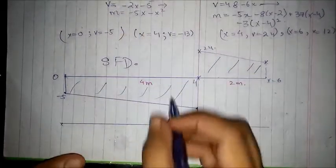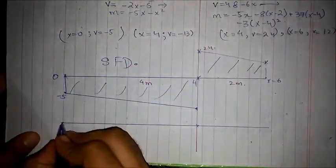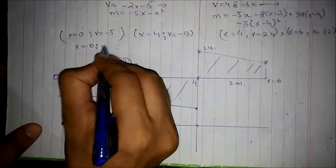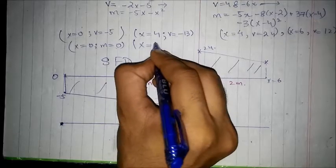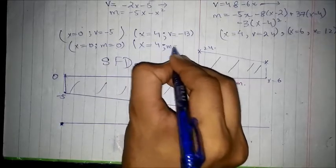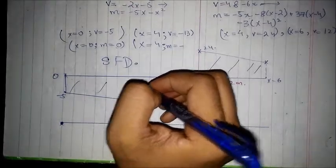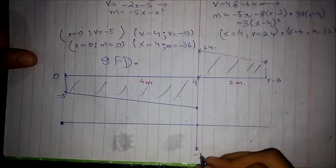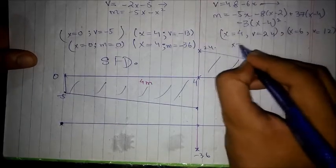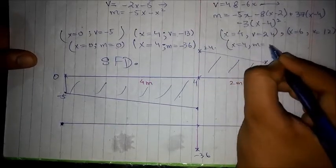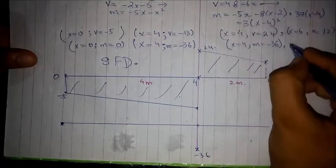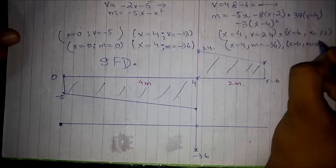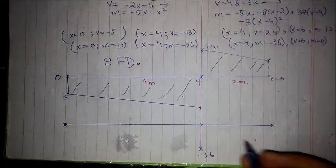For the bending moment diagram we use the moment equations. Substituting x equals 0 gives moment equal to 0. Substituting x equals 4 gives moment equal to minus 32. Using the section 2 moment equation and substituting x equals 4 gives moment equal to minus 36, which is the same point. Substituting x equals 6 gives moment equal to 0.